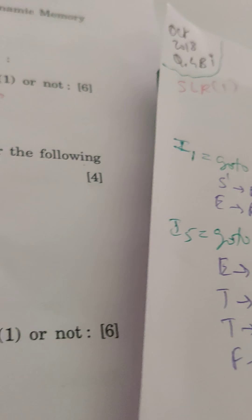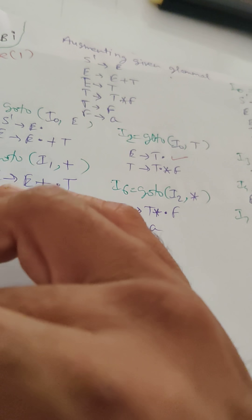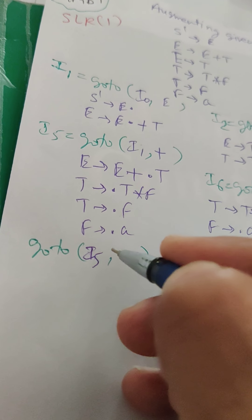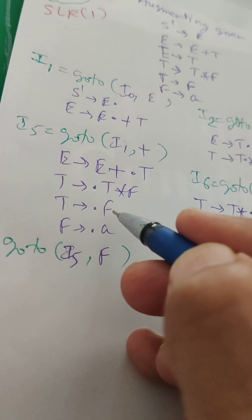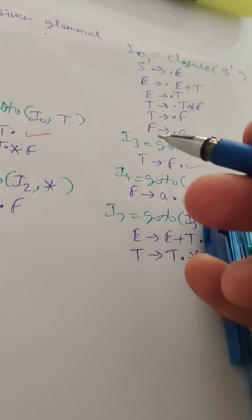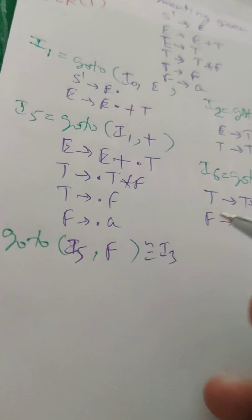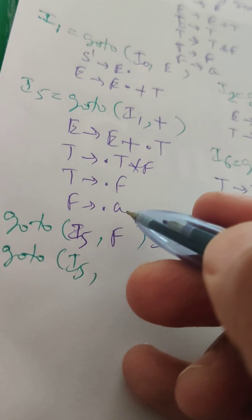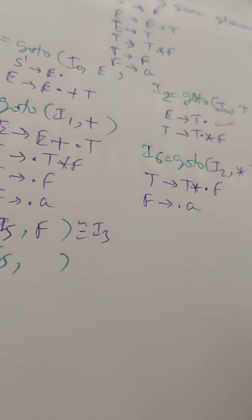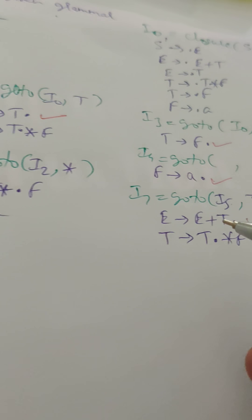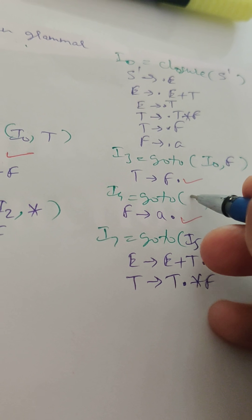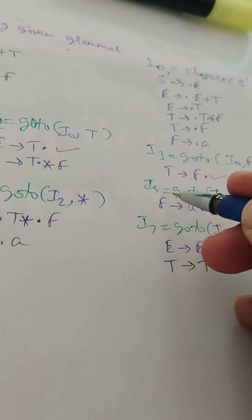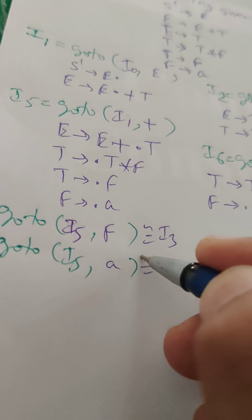The GOTO of I5 on F gives T → F., which is the same as item I3. The GOTO of I5 on a gives F → a., which is the same as item I4. Similarly, the GOTO of I6 on a is also the same as item I4.